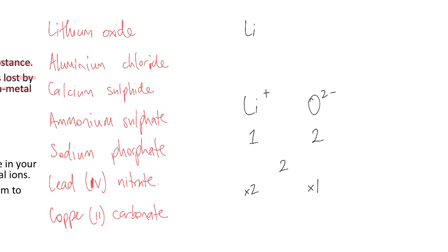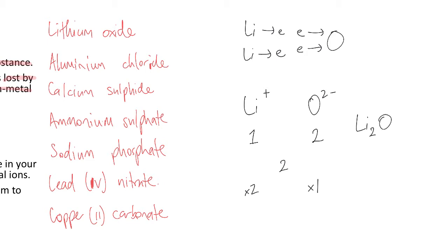Lithium gives away one electron and oxygen takes in two electrons. For that to work, I need two lithiums so that there are two electrons transferring across and two electrons being accepted. So I need two lithiums and one oxygen, and my formula will be Li₂O.